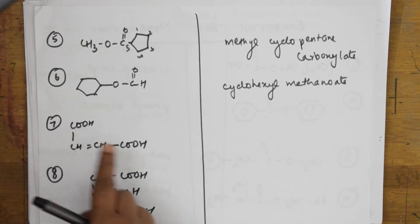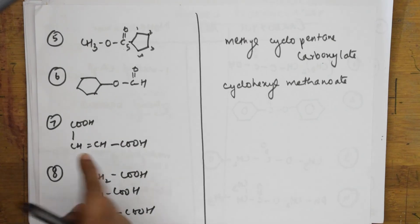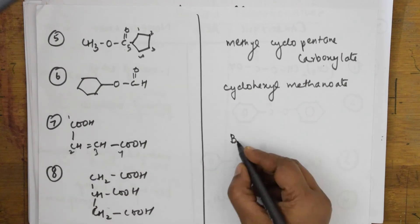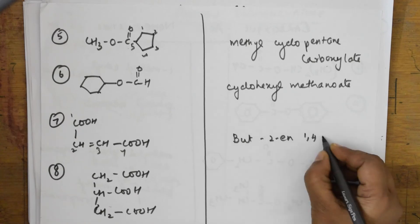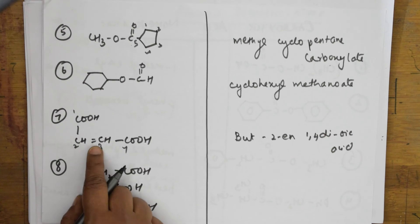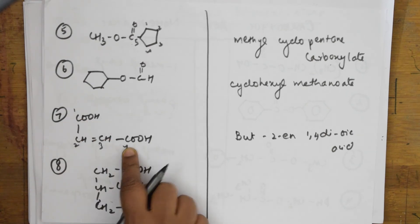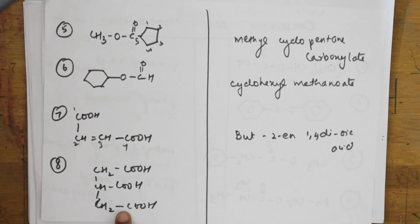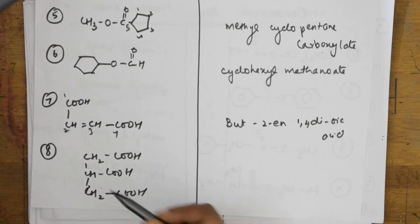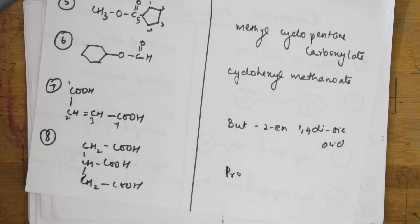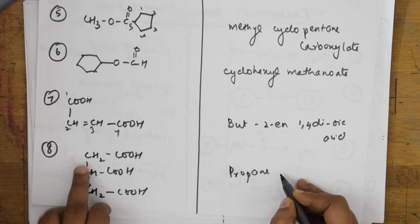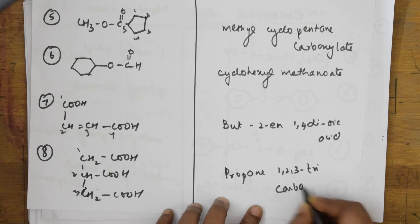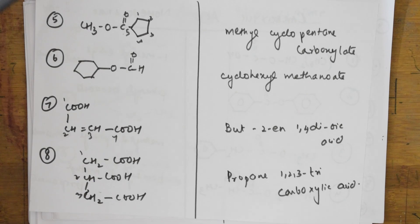Let us name this compound — it has two COOH groups. The parent chain is one, two, three, four — but — and there is also an alkene. According to the order of functional groups, name it but-2-ene-1,4-dioic acid. 'Dioic' means two oic acid groups. Now this compound has one, two, three carboxylic acid groups. The parent chain is three — propane. Name it propane-1,2,3-tricarboxylic acid.